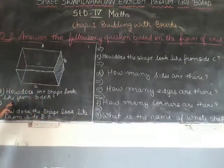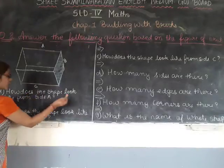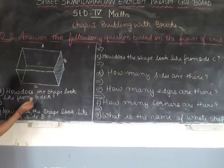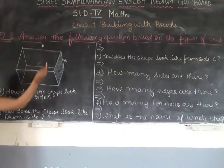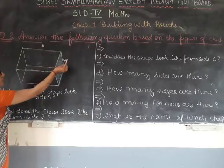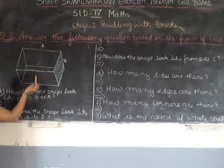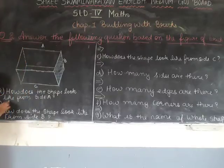First one: how does the shape look like from A? On this figure, A, B, and C are given. You can see the shape from this side — it looks like a rectangle.